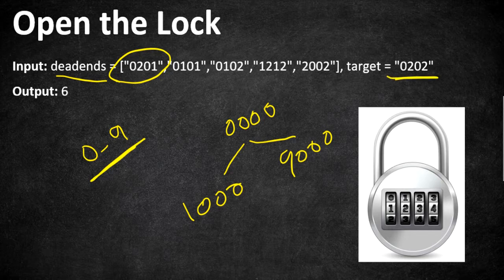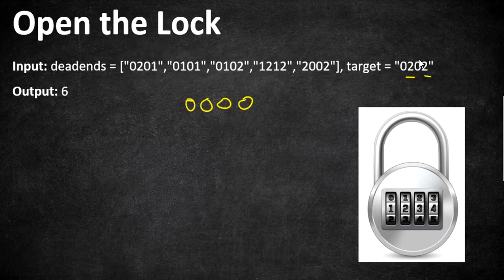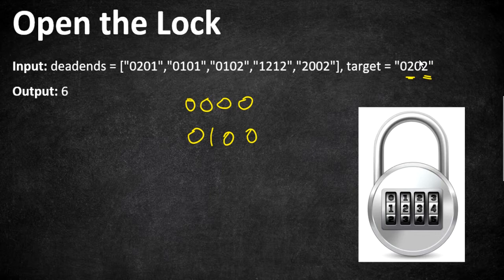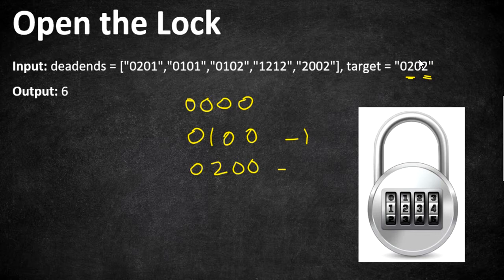Coming back to this example, we start from 0000 and we are trying to reach 0202 — the second and fourth wheel need to reach 2, and the first and third wheel stay at zero. So starting from 0000, at the first step we change the second wheel to get 0100, we check whether this is in the dead ends — it is not, so we proceed. At step 2 we change the second wheel again to get 0200, which is also valid.